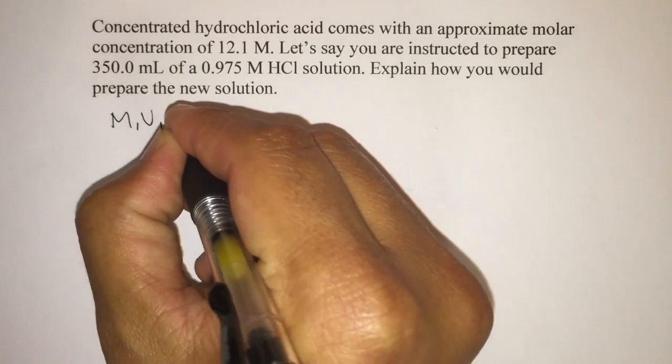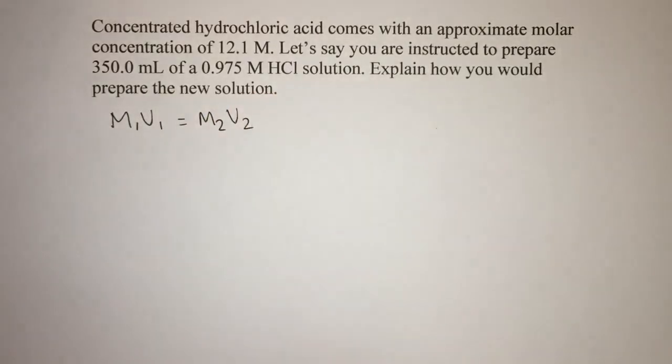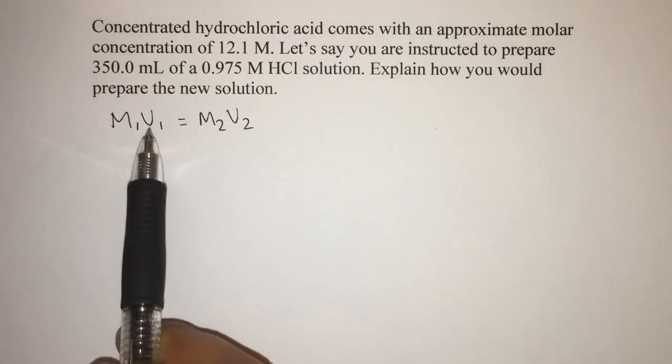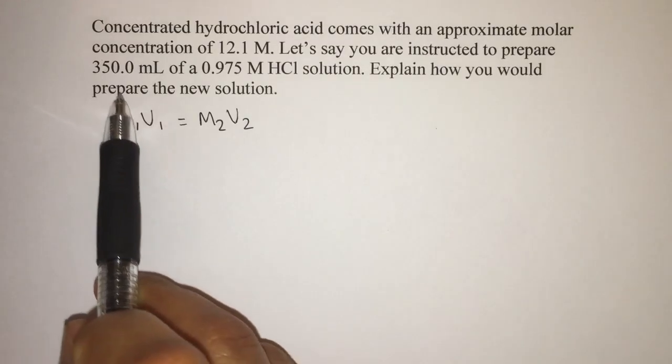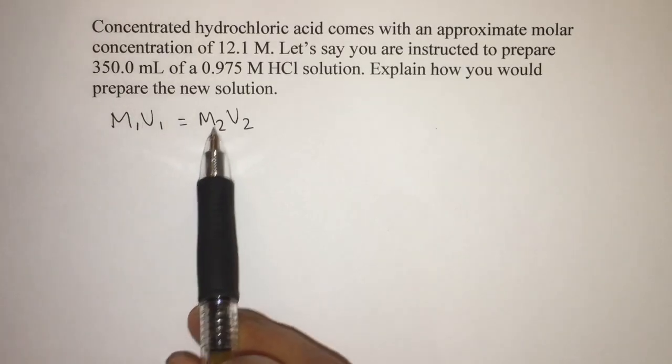M1 times V1 is equal to M2 times V2. And so the important thing here is that if we know an initial molarity and an initial volume, we can always change the volume to what we want and get the concentration that we want.